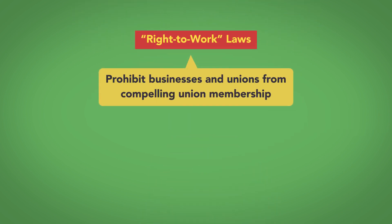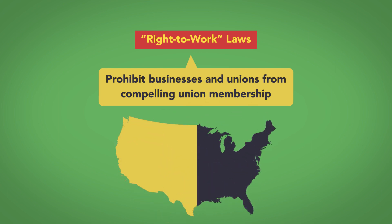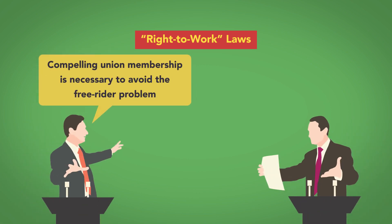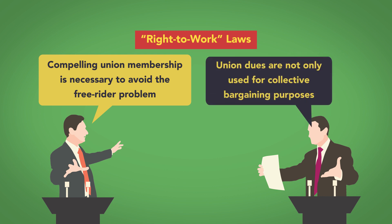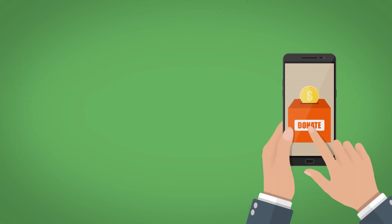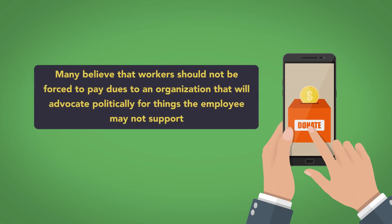These laws, often called right-to-work laws, prohibit businesses and unions from compelling union membership. About half of the states have enacted right-to-work laws. Opponents of these laws argue that compelling union membership is necessary to avoid the free-rider problem. Supporters, however, point out that union dues are not only used for collective bargaining purposes. Unions often use member dues to support or oppose political candidates or policies, and many believe that workers should not be forced to pay dues to an organization that will advocate politically for things the employee may not support.